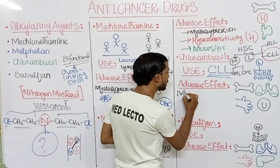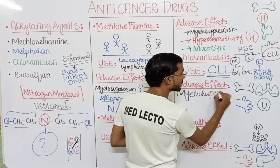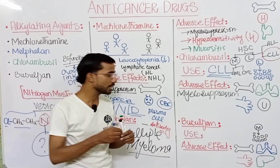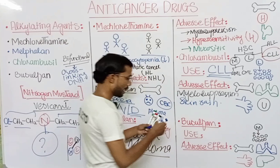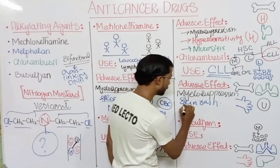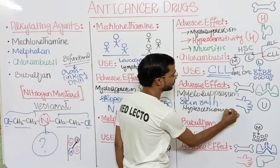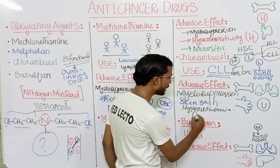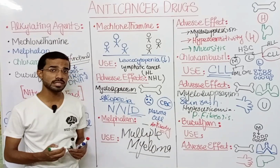Adverse effects of chlorambucil: myelosuppression is common, as it is with many anti-cancer drugs. You can also see skin rash, hyperuricemia — high levels of uric acid in the blood — and pulmonary fibrosis, which can ultimately progress towards cirrhosis as well.